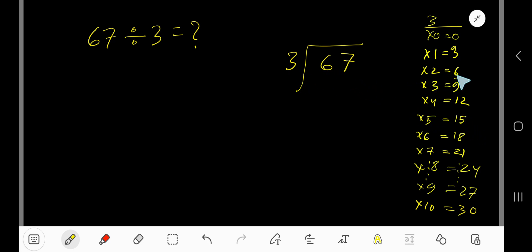3 goes into 6 how many times? 2 times. 2 times 3 is 6. Subtract 0. Bring down this digit 7.